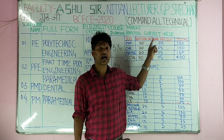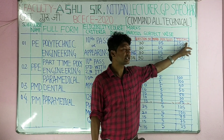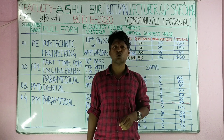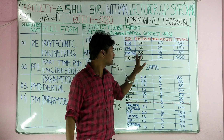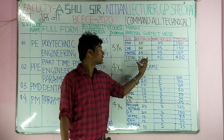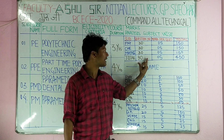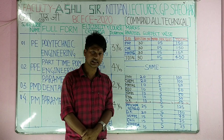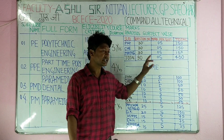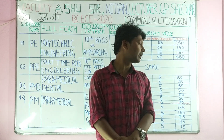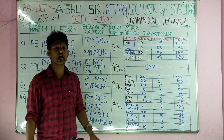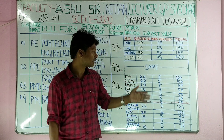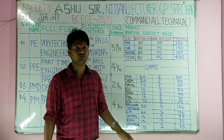Each question carries 5 marks. Multiply by 150 marks — so 150 marks per subject for physics, chemistry, and maths gives a total of 450 marks in the examination. Total number of questions is 90 and total marks is 450. Note: there is negative marking here.